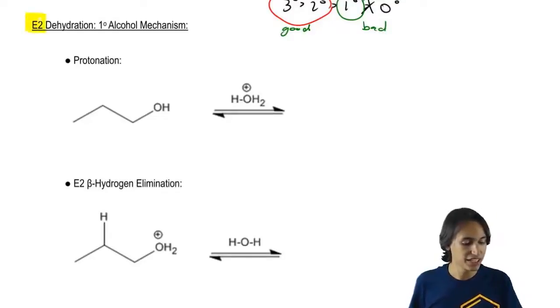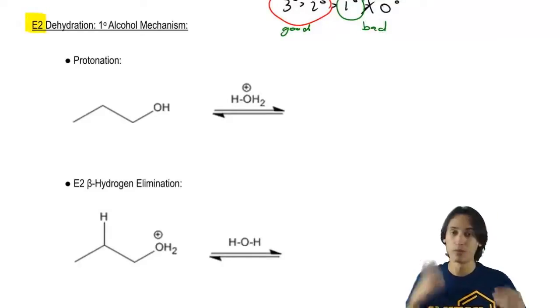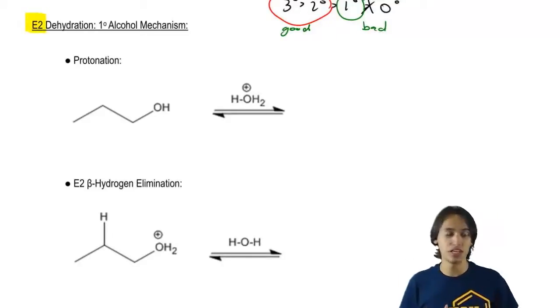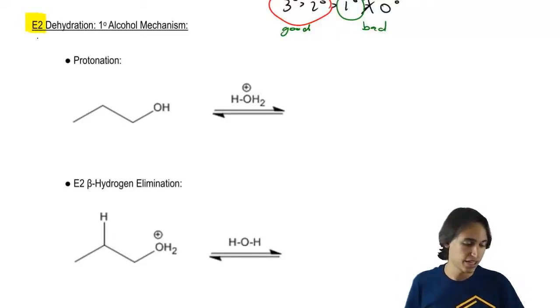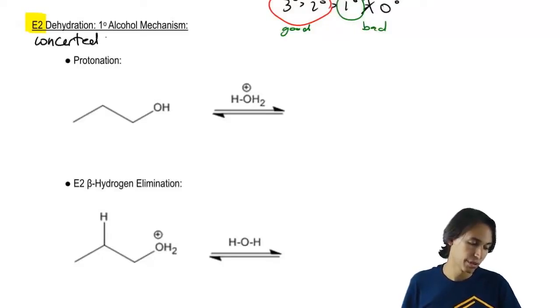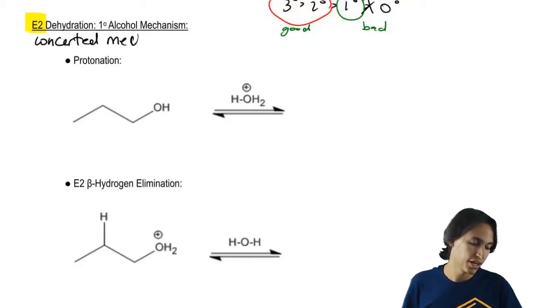The E2 mechanism, if you remember back to elimination, is a concerted mechanism. That means everything happens at once.